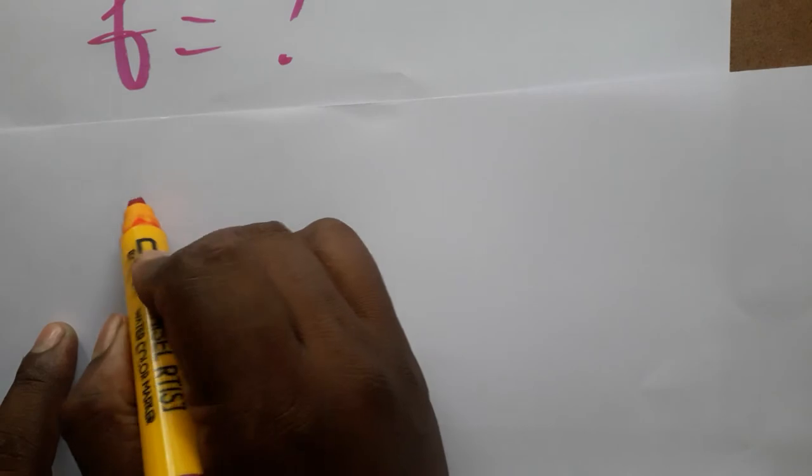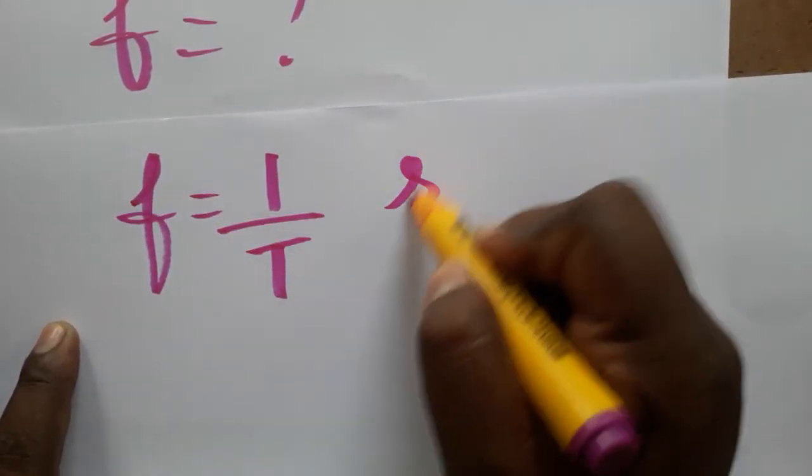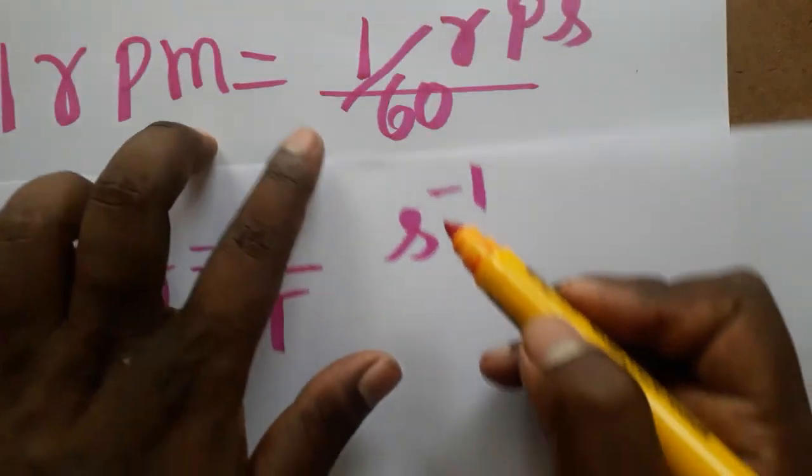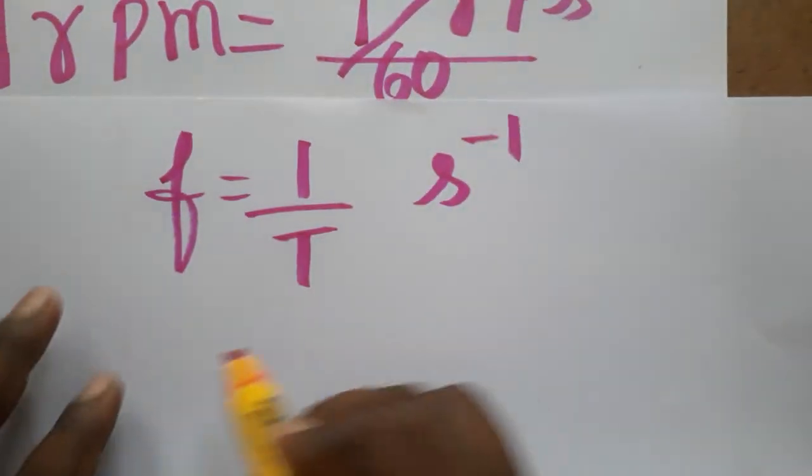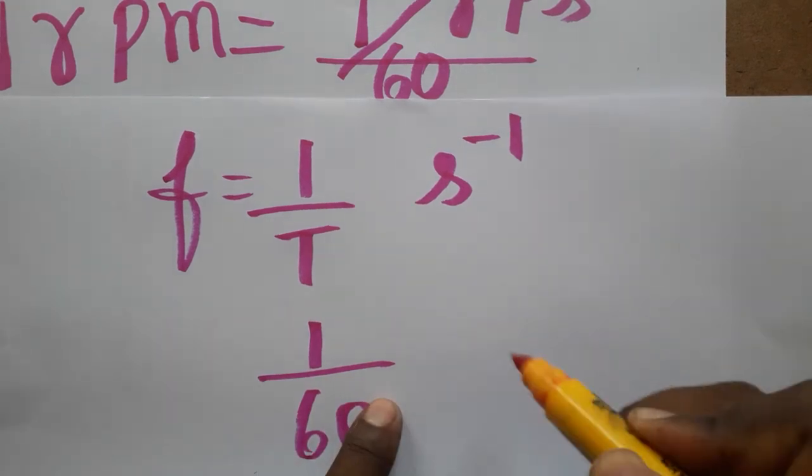Frequency is equal to 1 by time period. That is called second inverse - the unit of frequency. So 1 RPM is 1 divided by 60 per second, or we can take it as hertz.